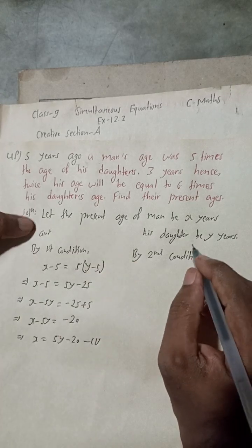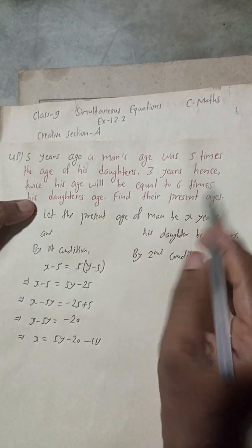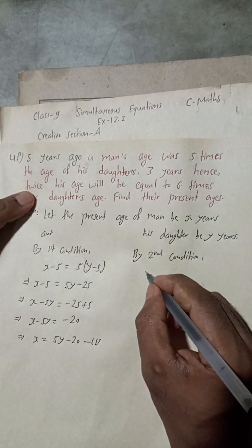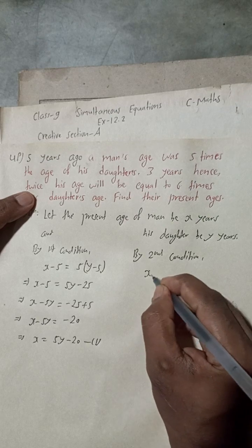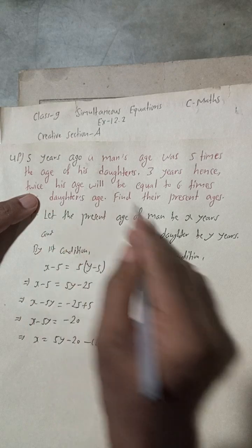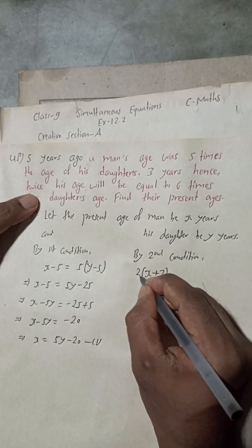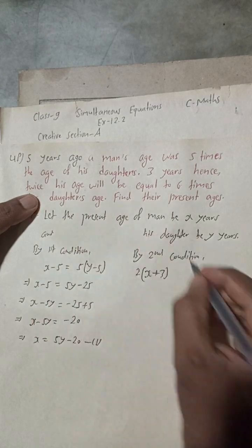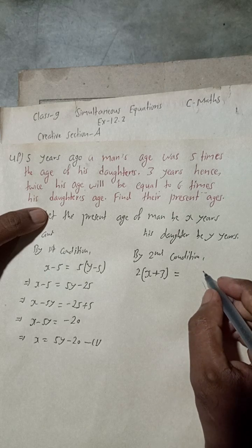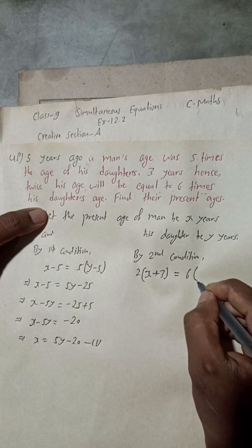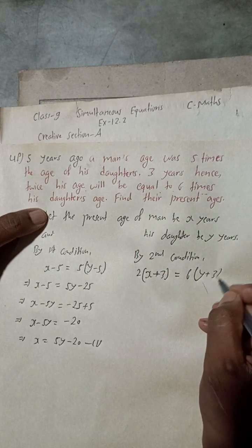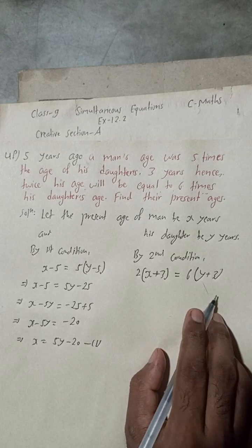By the second condition: three years hence, the age of the father will be x plus 3. Twice his age will be equal to six times his daughter's age. Three years hence, the daughter's age will be y plus 3. So twice the man's age equals six times the daughter's age.